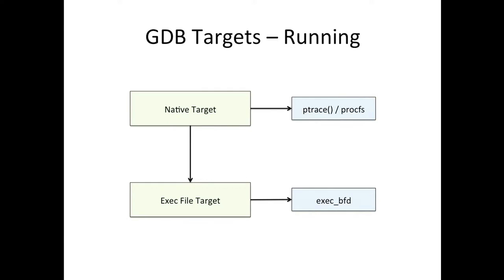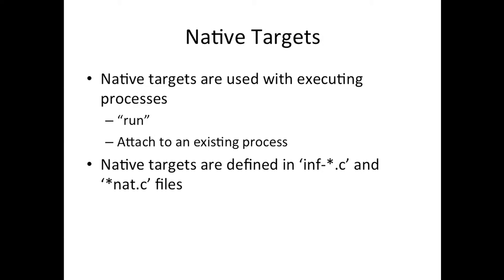When running a process, GDB calls that a native target. A native target, when a memory request comes in, will use ptrace and proc fs in place of what would have been the core BFD. A native target is what you get when you call run or attach to an existing process.